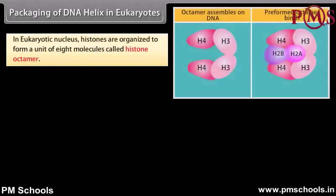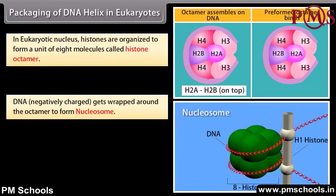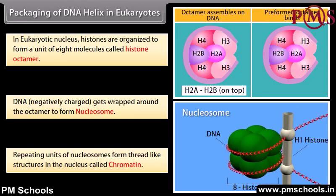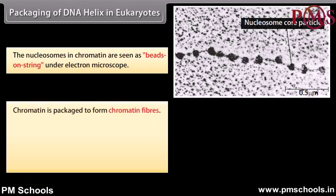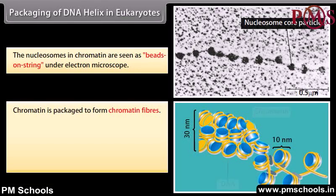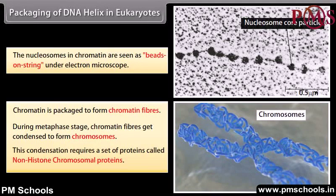Packaging of DNA helix in eukaryotes. In eukaryotic nucleus, histones are organized to form a unit of 8 molecules called a histone octamer. DNA, being negatively charged, gets wrapped around the octamer to form a nucleosome. Repeating units of nucleosomes form thread-like structures in the nucleus called chromatin. The nucleosomes in chromatin are seen as beads on a string under an electron microscope. Chromatin is packaged to form chromatin fibers. During the metaphase stage, chromatin fibers get condensed to form chromosomes. This condensation requires a set of proteins called non-histone chromosomal proteins.